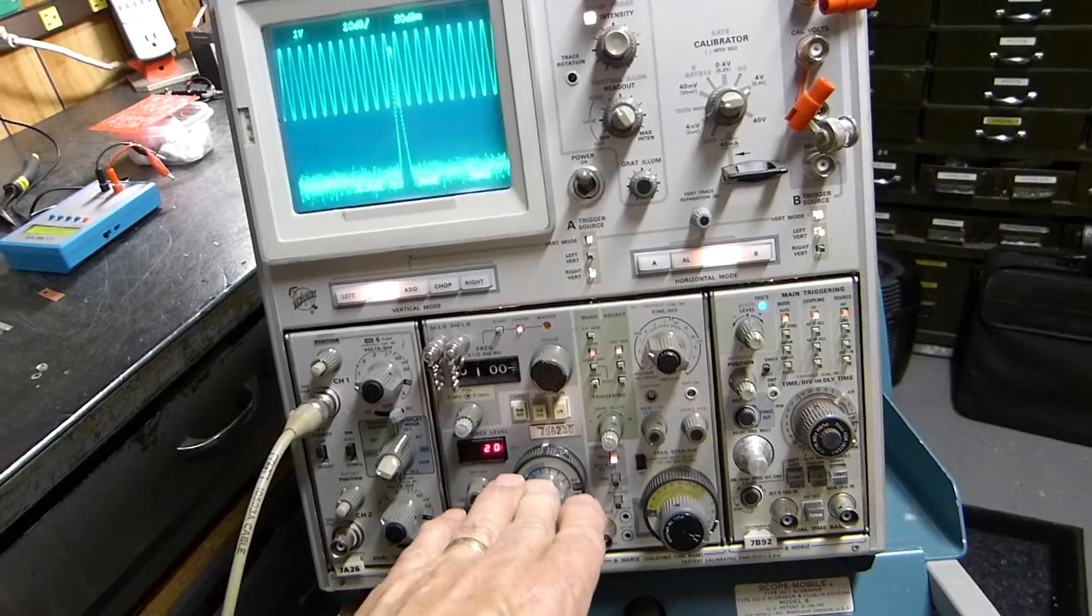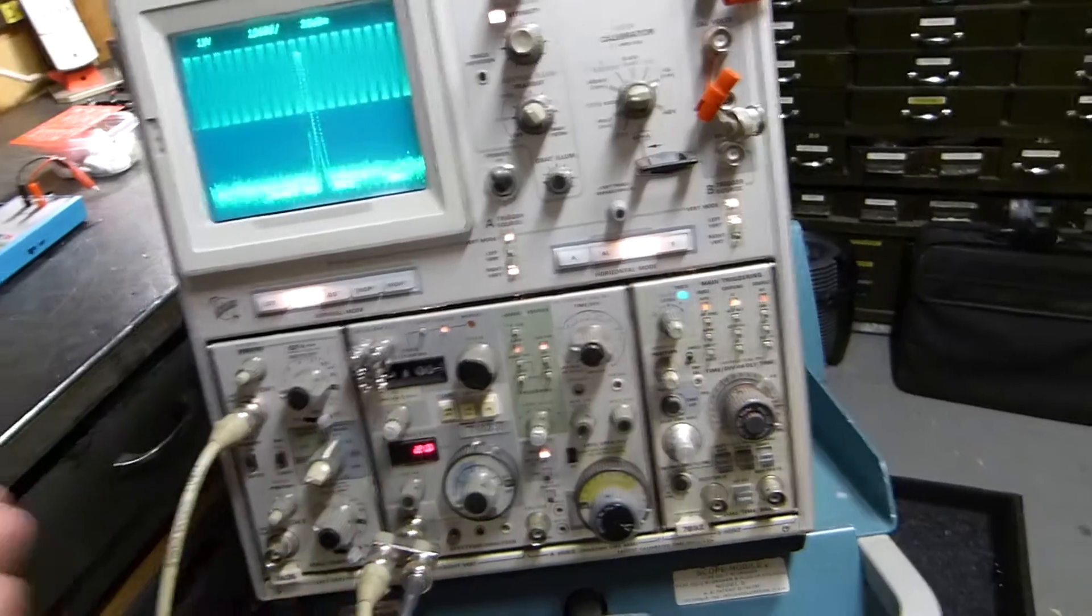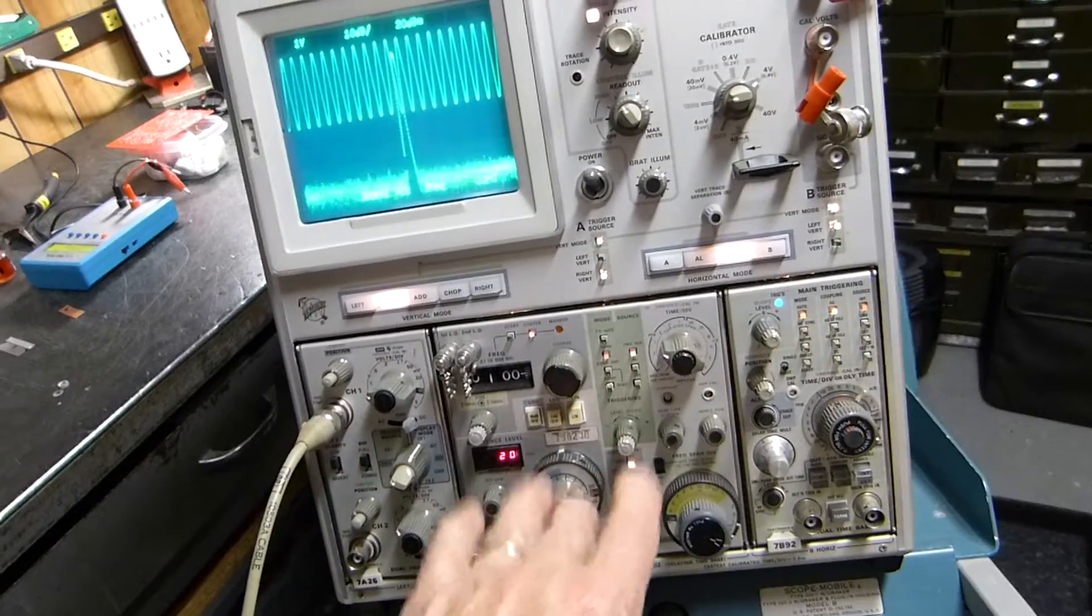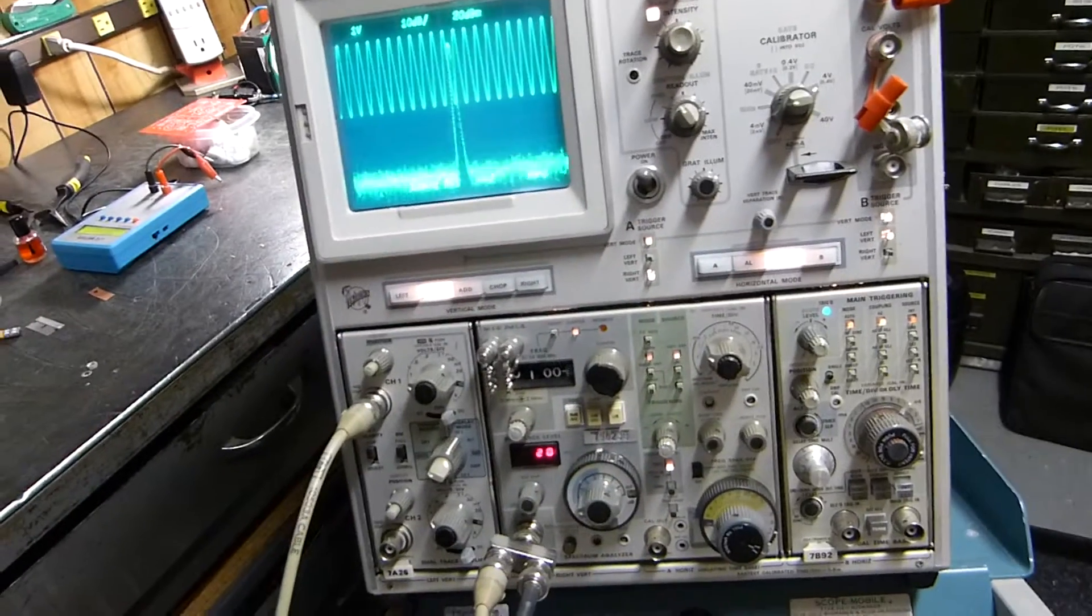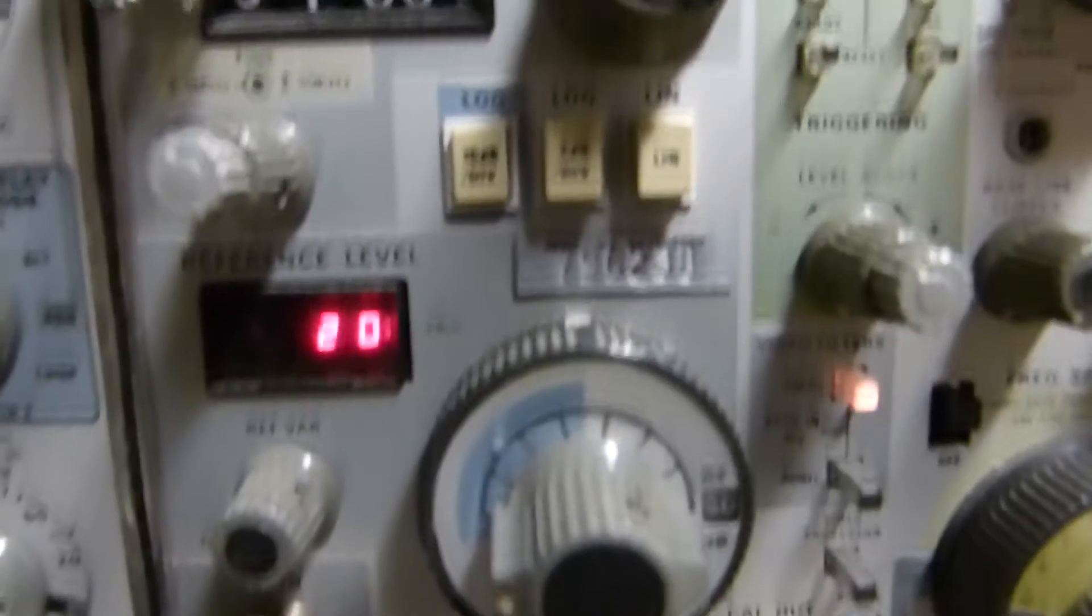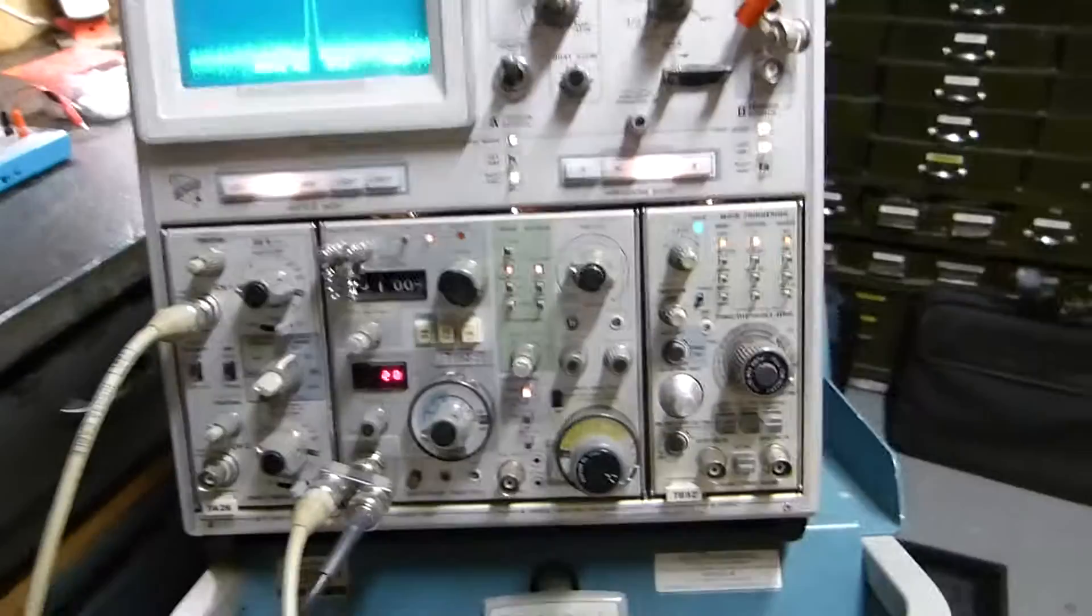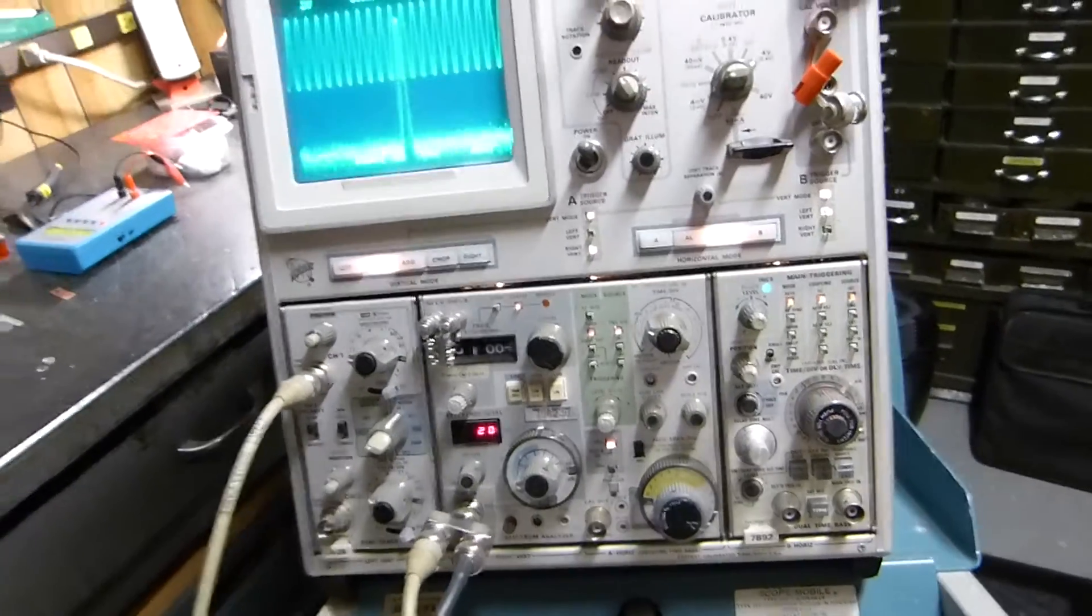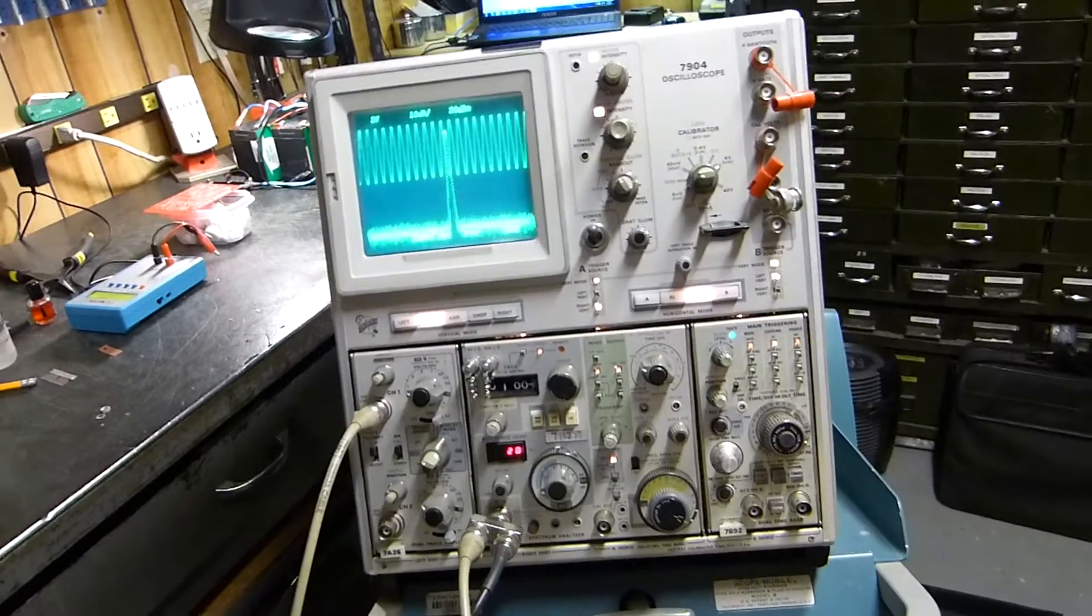I've had the 7L5 but I got rid of it, it didn't serve my purpose very well. This 7L12 is just a beautiful device, goes from a hundred kilohertz to 1.8 gigahertz. This is an old NASA surplus unit, works great.